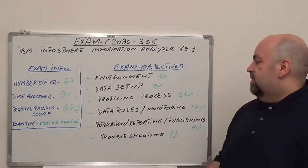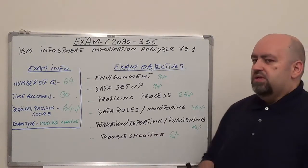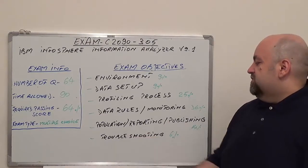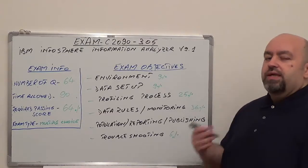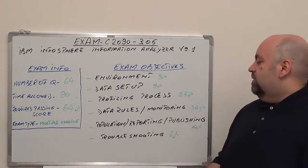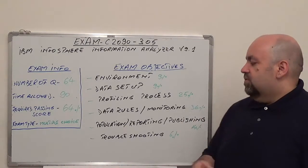The fourth one is data rules monitoring, 36% of total questions. Next one is population reporting and publishing, with 14% of total questions. And the last one is troubleshooting, with 6% of total questions.